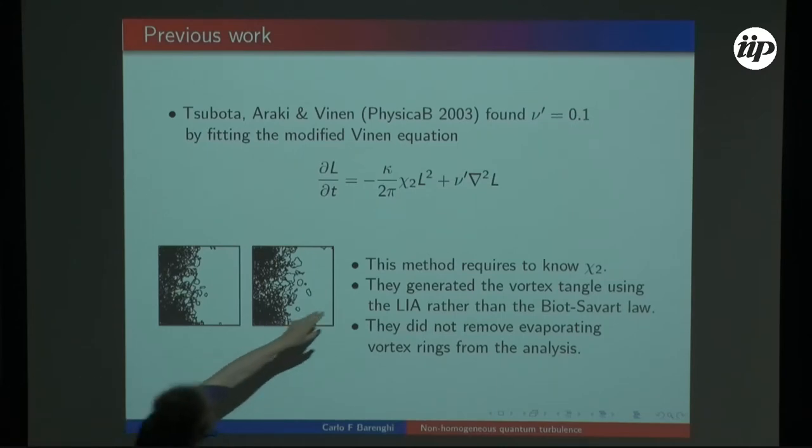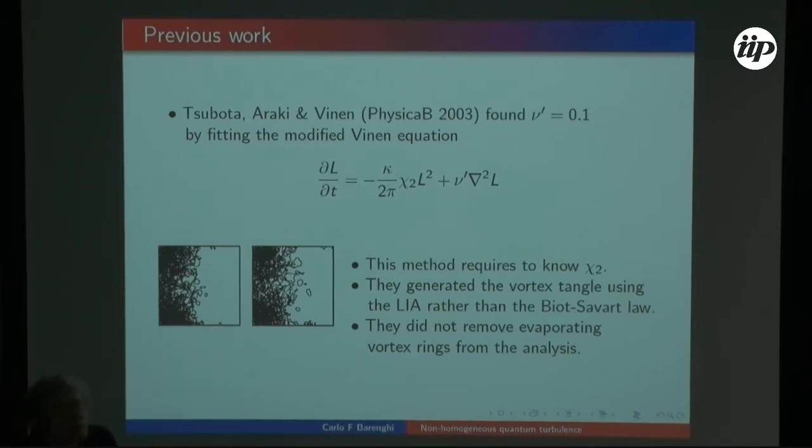They added this extra term, Laplacian of L, with some diffusion coefficient. This equation is a good idea, but there is not a derivation from vortex dynamics, it's just a thought. We assume a diffusion process and try to recover nu prime. Another difficulty is that by doing so, one has to guess what is the parameter chi2, which is in the first term on the right-hand side. Both the generation term and the destruction term in the master equation, in Vinen's equation, contain these dimensionless parameters chi1 and chi2. It's well known what is the ratio of chi1 and chi2, but to get chi2 independently takes an effort. They had to do separate numerical simulations to recover chi2, and then feed the data, feed this slow spread, and obtain nu prime, which is 0.1 in units of kappa.